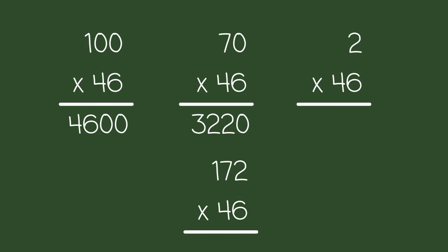And finally, 2 times 46. Since you previously counted 46 twice in the process of counting 46 seven times, it won't take very long to find that 46 times 2 equals 92.